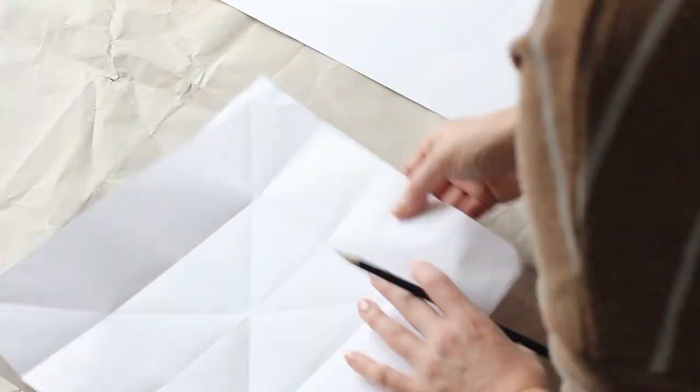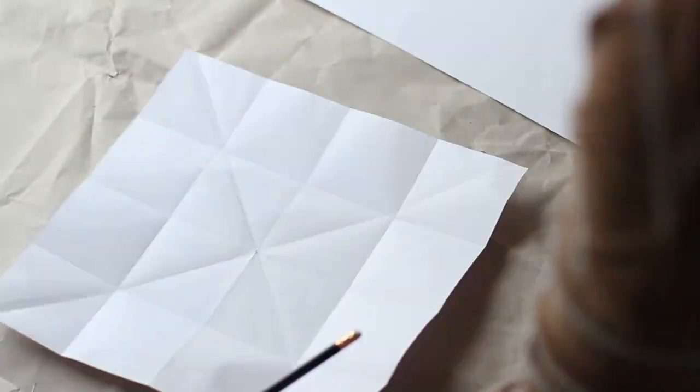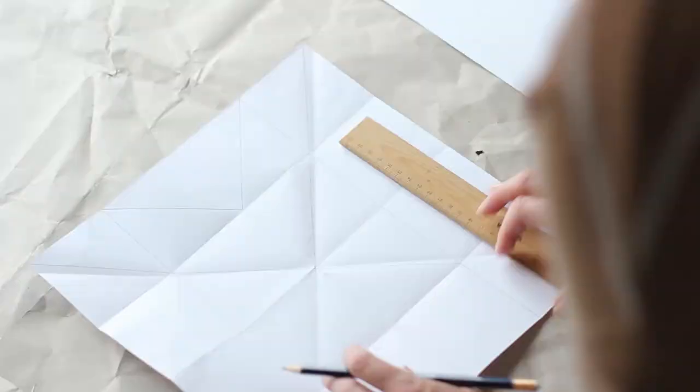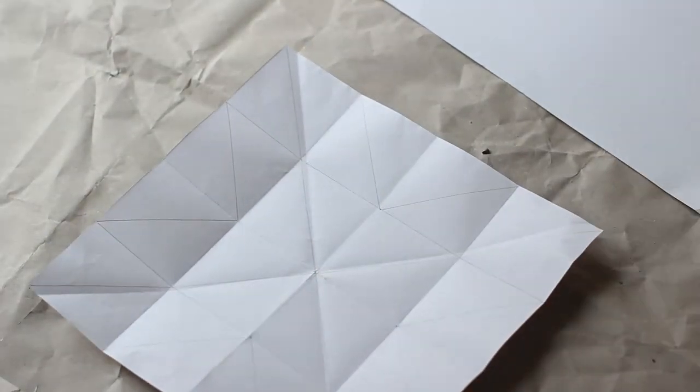Next you can use a pencil to draw along the fold lines, and now you can draw in the lines that you need for whichever farmhouse quilt design block you'd like to use.